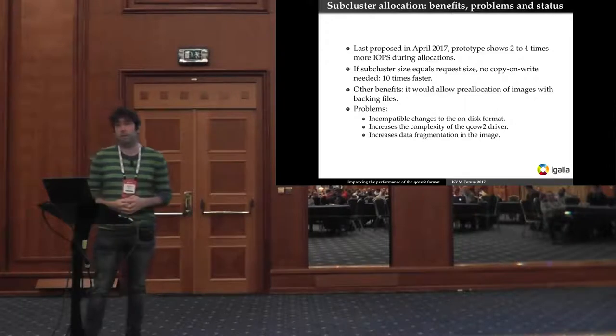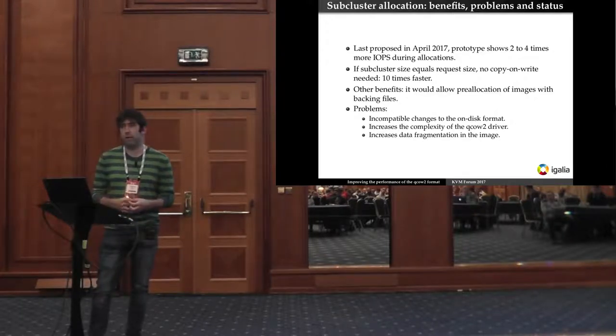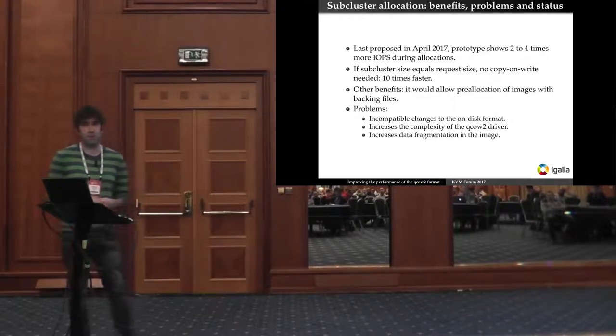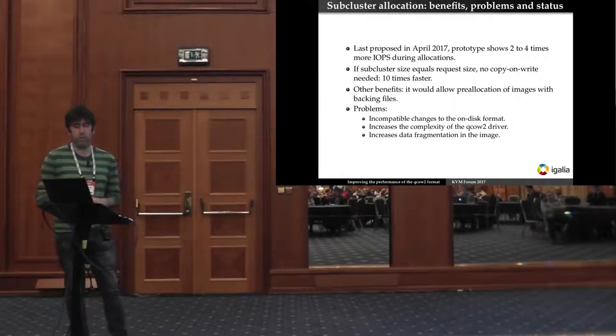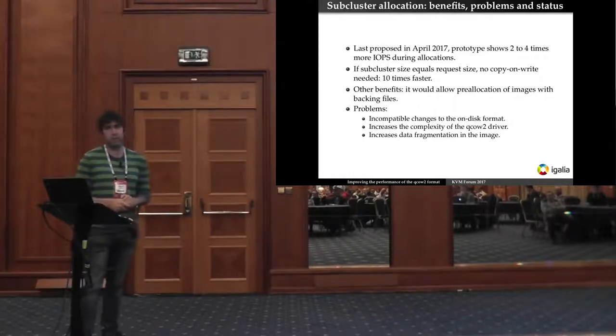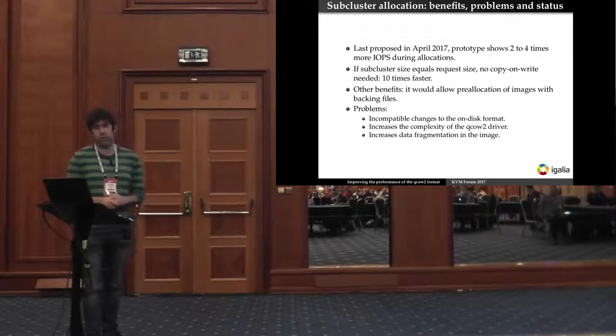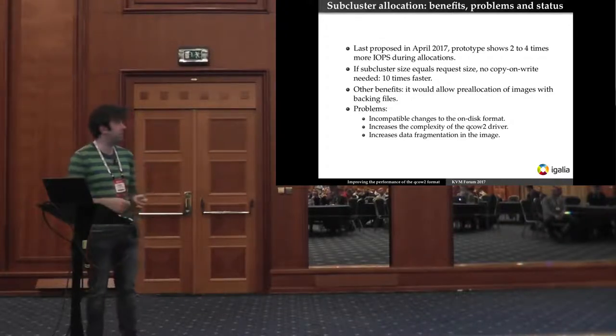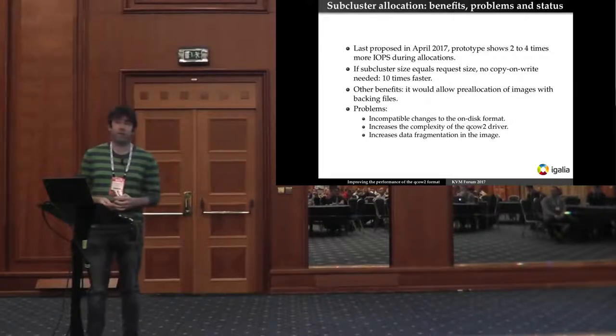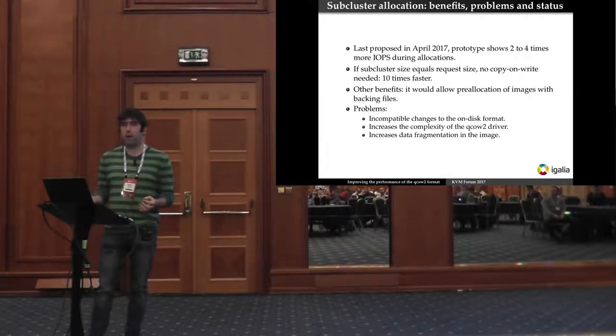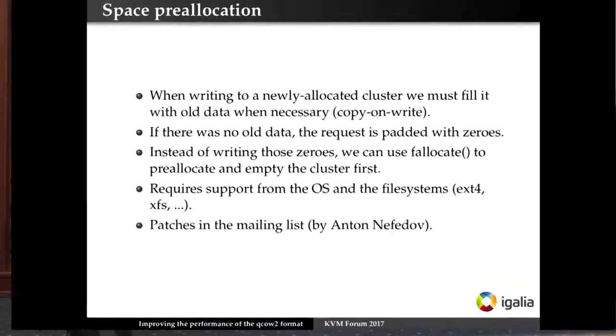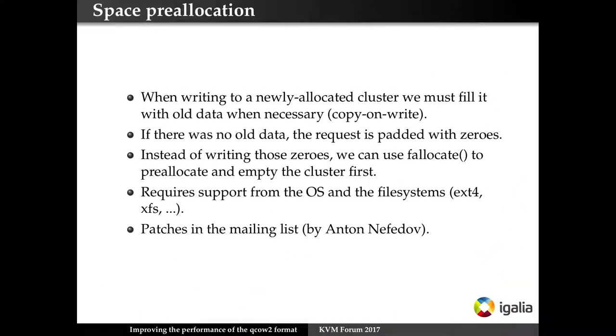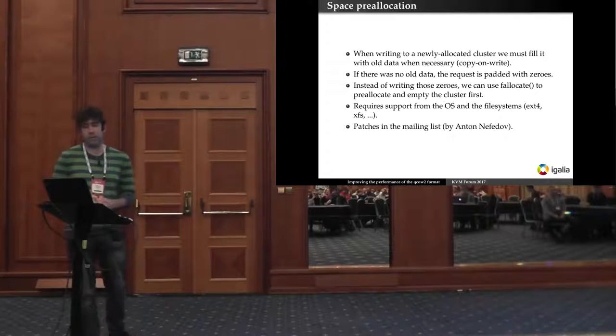Other benefits is that you could actually create pre-allocated QCOW2 images with backing files, which is currently not possible, but there are several problems with this approach. One of them is the most clear one is that it's incompatible. You need incompatible format changes, so any images created with sub-cluster cannot be read with older versions of QEMU. It also increases the complexity of the QCOW2 driver more significantly than the previous changes that I was discussing, and it also increases the data fragmentation in the image since we are allocating smaller portions now.